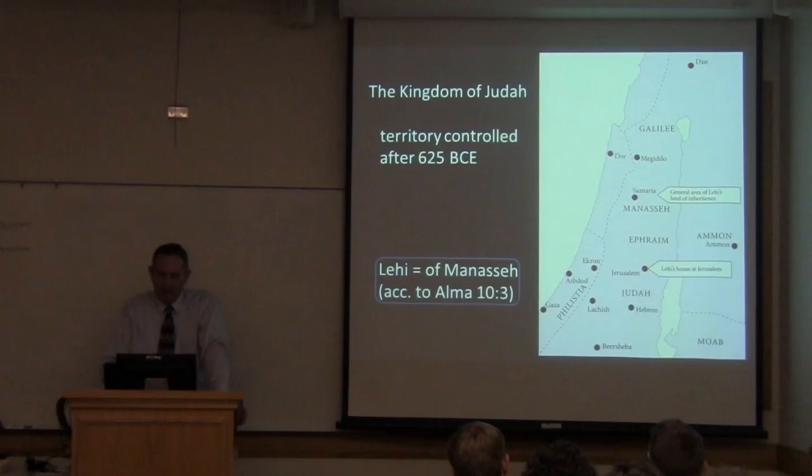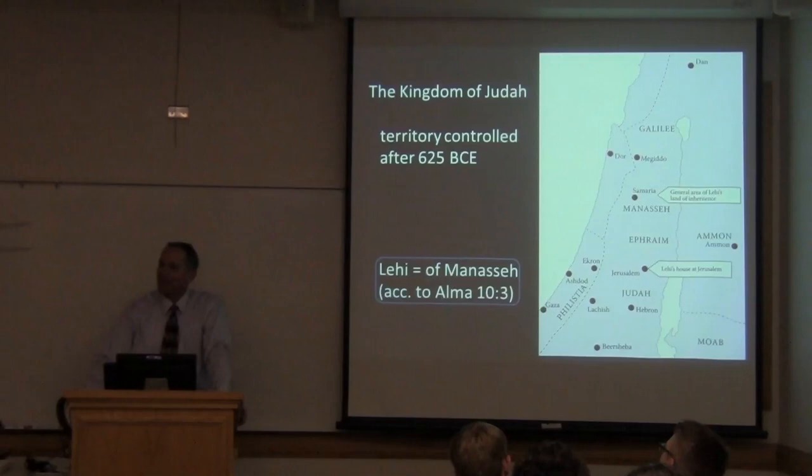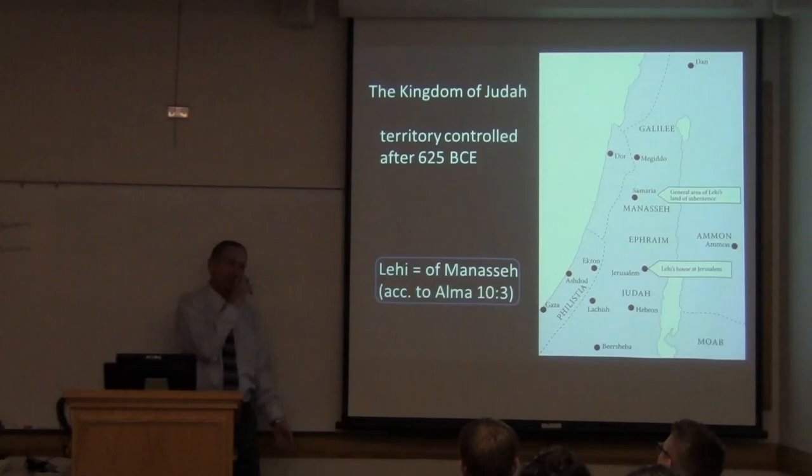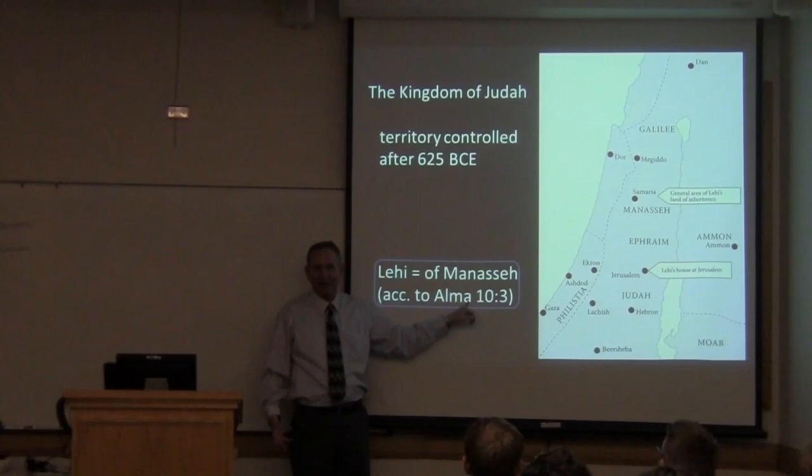Lehi is not identified as being of Manasseh tribal heritage in the record of Nephi — and it's interesting that he's not. The only reference to this in the whole Book of Mormon is actually in Alma 10:3. But that suffices for us to go ahead and add that into the mix.